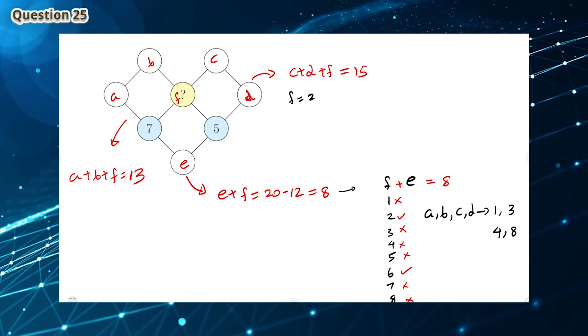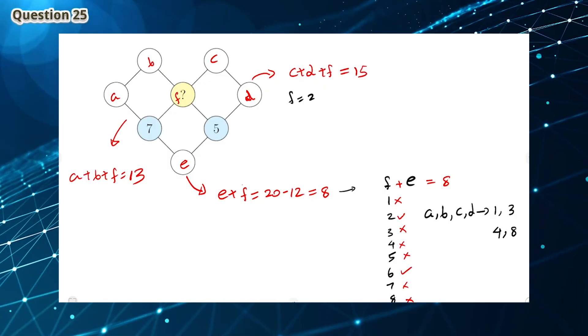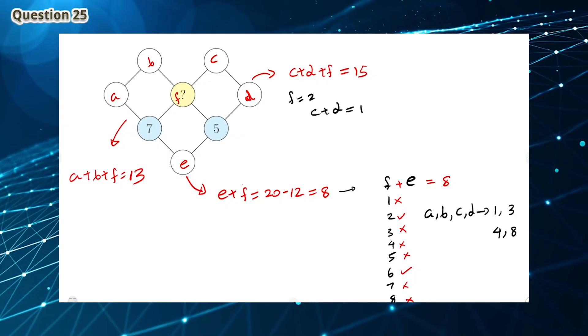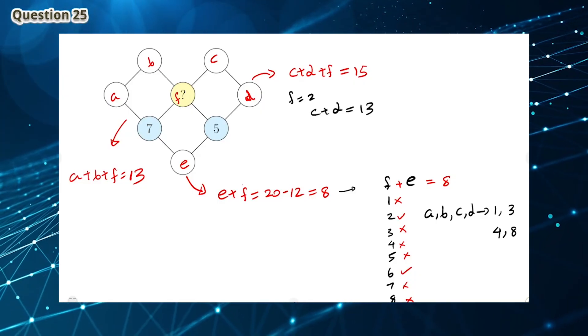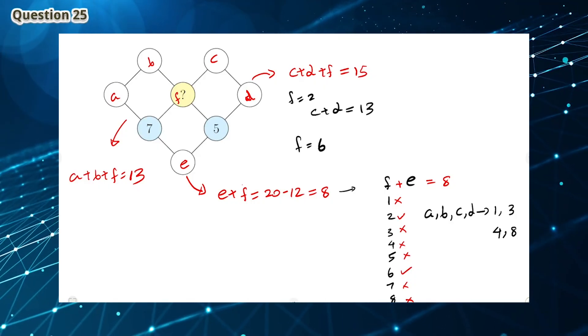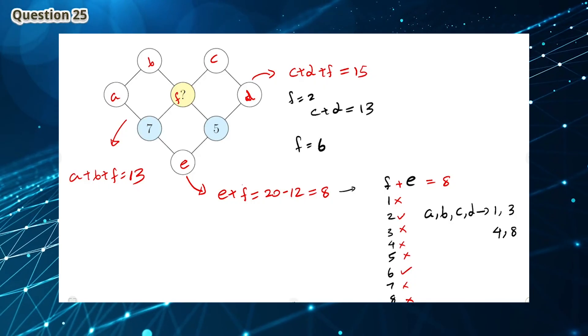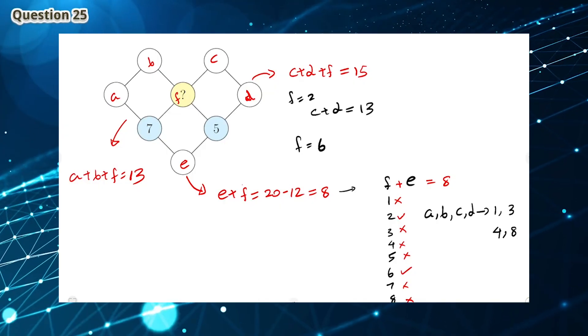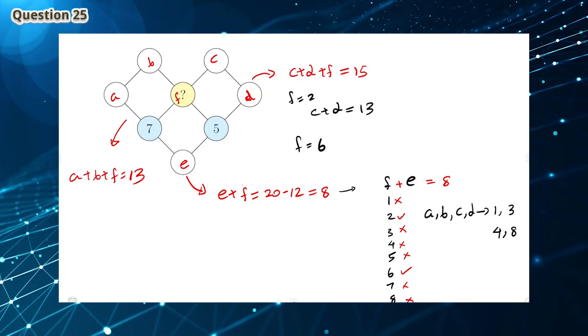If F equals 2, we can use the equation C plus D plus F is 15. Then C plus D equals 13. However, we can't make 13 from the values of 1, 3, 4, and 8. If F is 6 then C plus D equals 9. We can make 9 with the numbers 1 and 8. This means case 2, which is F equals 6, has to be the solution.